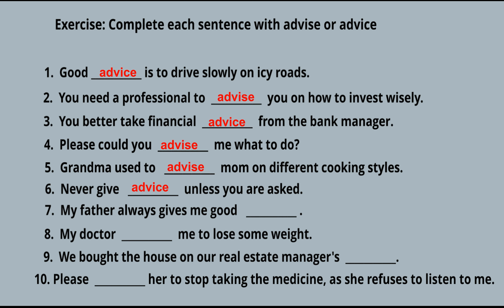Seventh: 'My father always gives me good ___.' What comes here — noun or verb? Noun. 'My father always gives me good advice' — good suggestions, good tips. Eighth: 'My doctor ___ me to lose some weight.' What comes here? A verb. 'My doctor advised me to lose some weight' — meaning he instructed you to lose some weight.